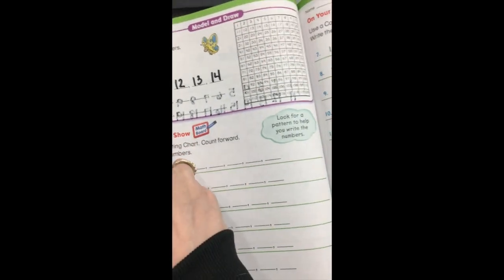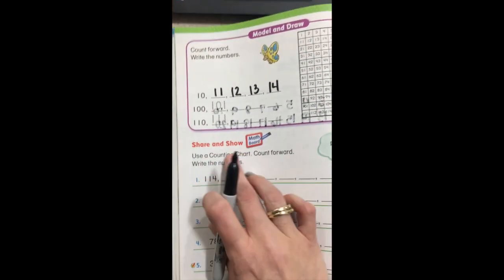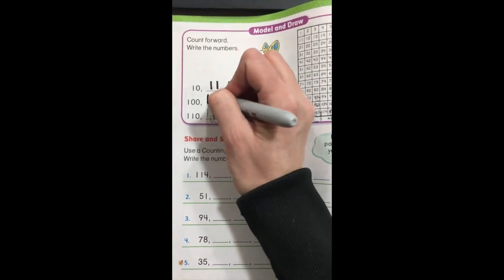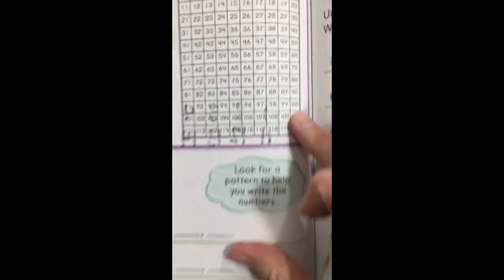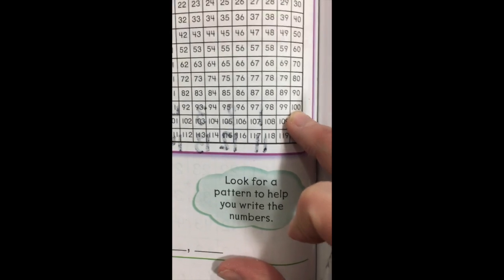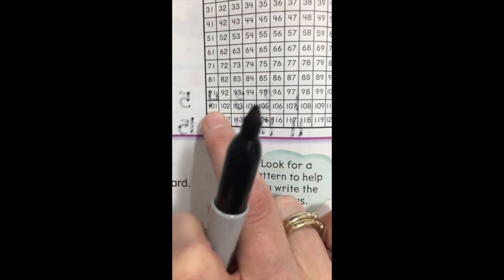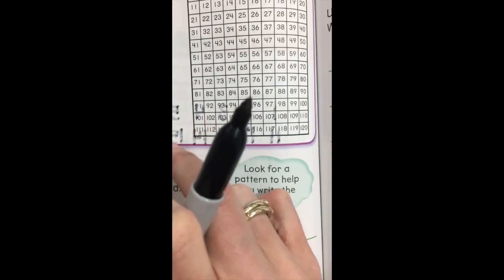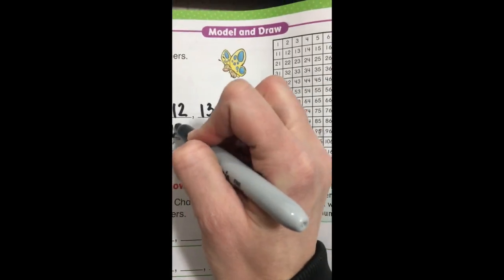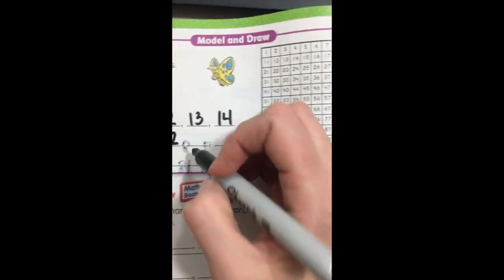Now they're going to jump to 100. They want you to start right there at 100, and they did the next one for you, 101. If you were not sure what came after 100, we could look over here at this handy dandy chart, and we are at 100, and we're going to slide over here to the row right underneath, and it says 101. Now we know 102 is next. 102. What comes next? 103.